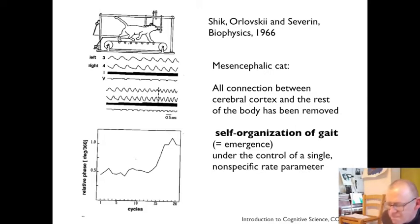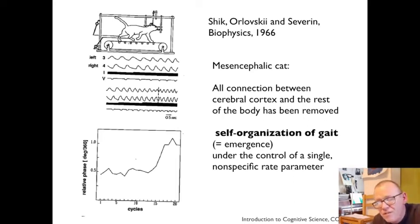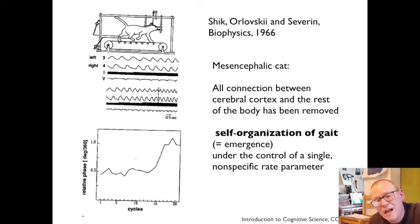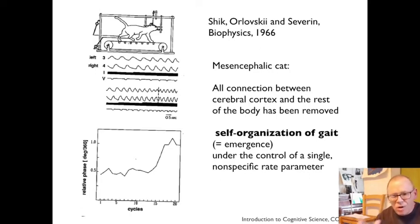We can see how the body as a whole organizes itself in locomotion from these slightly creepy experiments done in the Soviet Union in the 1960s. Shik, Orlovsky, and Severin did experiments on what they called a mesencephalic cat — a cat in whom the connection between the higher motor cortices and the rest of the body had been severed, leaving them effectively paralyzed with no voluntary movement. They can't even stand up, so the illustration shown is inaccurate in that it leaves out a belt suspended under the tummy holding the cat up, as it's placed on a treadmill. But the astonishing thing is: with no input from the cerebral cortex, the body self-organizes into a gait in which the limbs have gate-like arrangements with fixed phase relationships.